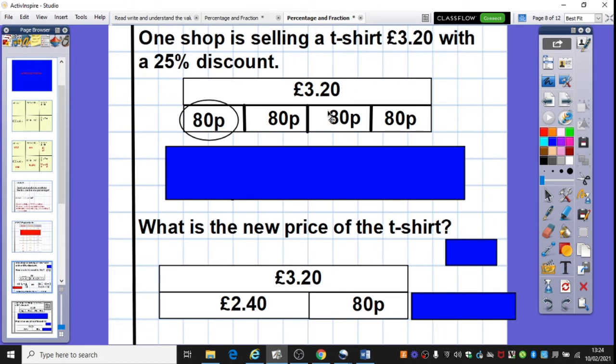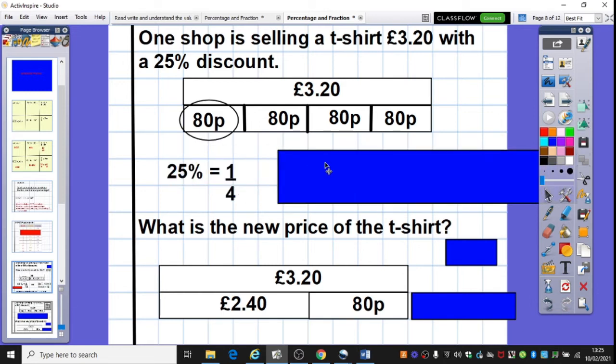So here's another example then here. Slightly harder. You'll notice I've worked with pounds and pence here. I'm going to model in a moment underneath here how we can make that a little bit easier. One shop is selling a t-shirt for £3.20 with a 25% discount. So £3.20, I personally probably think, I'm not sure I like the idea of trying to divide that by 4 because 25% is equivalent to one quarter.